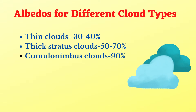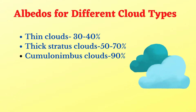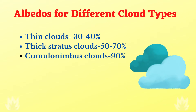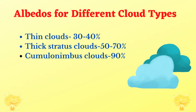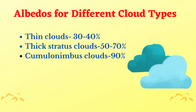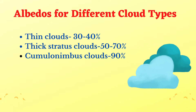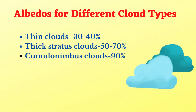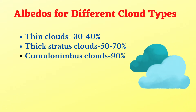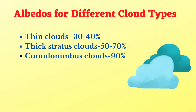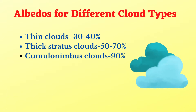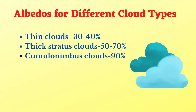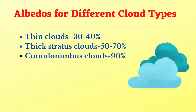Thicker stratus clouds have albedos of between 50% to 70%. Cumulus and cumulonimbus clouds, which are associated with heavy rains, have albedos of about 90%. So in the presence of these cumulonimbus clouds, very little or no sunlight enters and the sky is usually very dark.